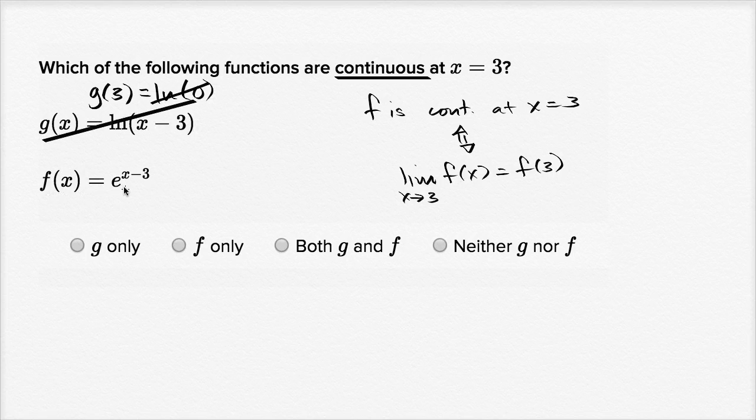Now f of x is equal to e to the x minus three. Well, this is just a shifted over version of e to the x. This is defined for all real numbers, and as we saw in the previous example, it's reasonable to say it's continuous for all real numbers.